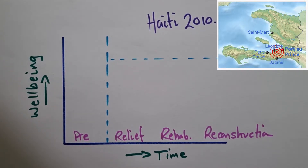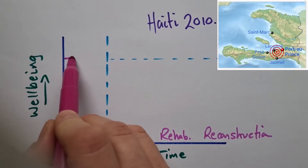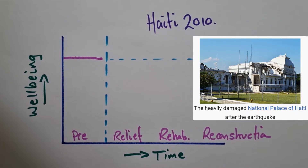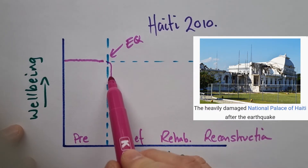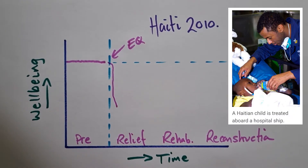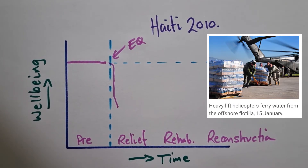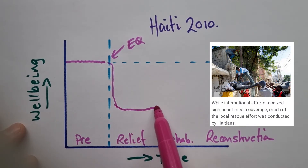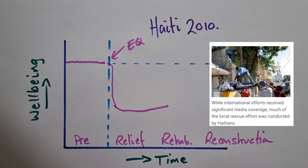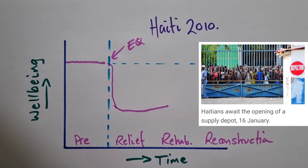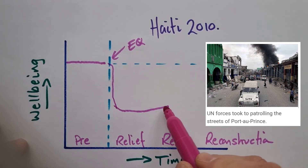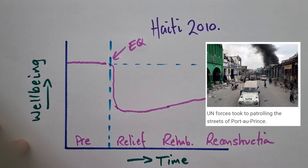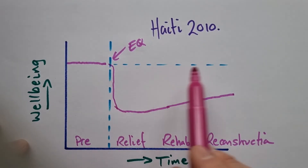Here's Haiti's disaster response curve. We have the pre-disaster phase with a pretty low baseline — living conditions weren't very great to begin with. Then we reach the relief and recovery phase once the earthquake happens, and there's a huge drop-off in quality of living standards. The government was overwhelmed, international aid flooded in, but even then aid was delayed and poorly distributed. The recovery was slow and uneven — even four years later only half the rubble had been cleared and many people were still in temporary shelters. For Haiti, recovery didn't just mean rebuilding; it meant surviving. So the line goes like this and doesn't ever reach back up to the standards from previously.